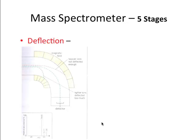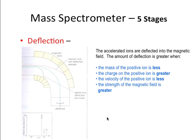The next stage is deflection. They're put through the accelerated ions, or then put through a magnetic field. The amount of deflection depends on the mass. The deflection is greater when the mass of the positive ion is less, the charge is greater, the velocity is less, and the strength of the magnetic field is greater. So there's four things that really make the deflection greater.